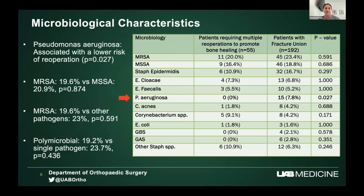This is where our research gets interesting. We found that patients infected with Pseudomonas had a lower risk of going on to non-union — meaning a lower risk of that fracture not healing. We had hypothesized that patients infected with MRSA would have a higher risk of non-union, but our research did not support that. Comparing MRSA versus MSSA showed no difference, MRSA versus any other pathogen showed no difference, and polymicrobial versus single-pathogen infections also showed no difference. Only Pseudomonas infection was significant.